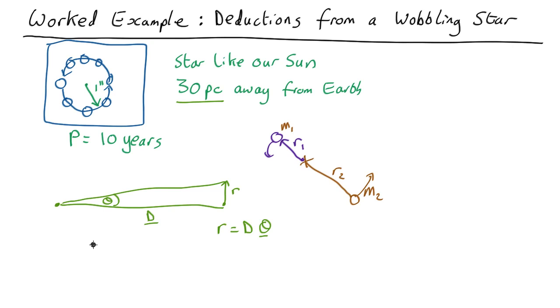So we get that R equals d which is 30 parsecs. 30 times a parsec is 3.1 by 10 to the 16 meters times the angle. Now the angle is one arc second.